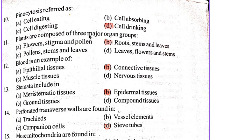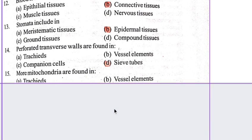Plants are composed of three major organ groups: B. Roots, stems, and leaves. Blood is an example of B. Connective tissues. Stomata include B. Epidermal tissues. Perforated transverse walls are found in D. Sieve tubes.